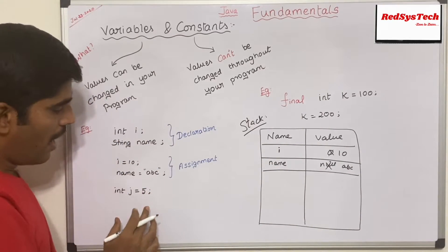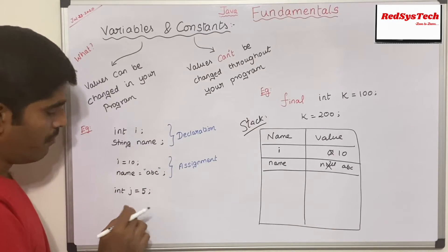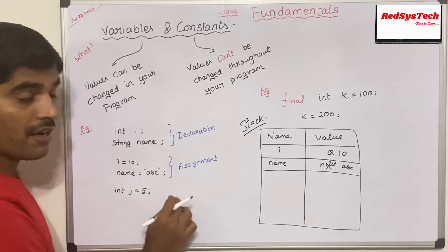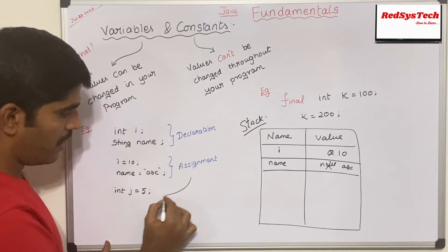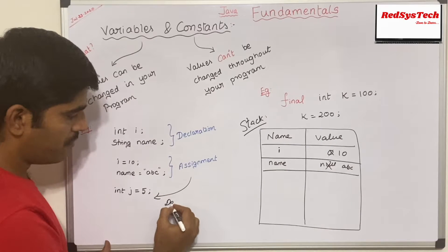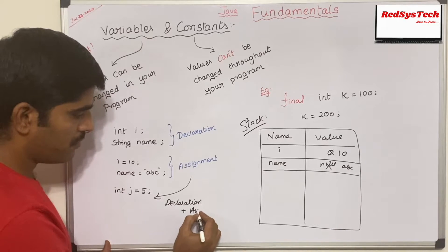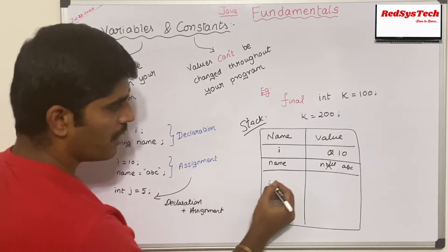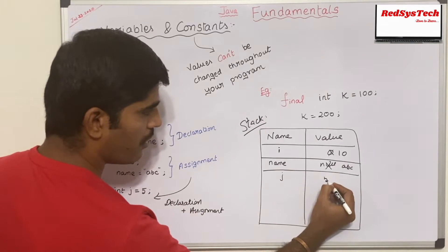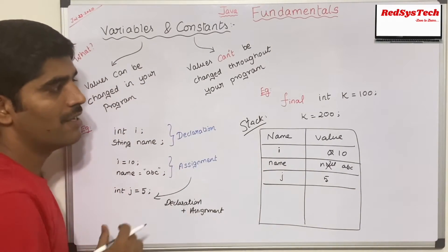There is another way of writing a variable declaration: `int j = 5` in a single line. Here I am combining declaration plus assignment. When this line executes, `int j = 5`, it stores `j = 5` in the stack memory.